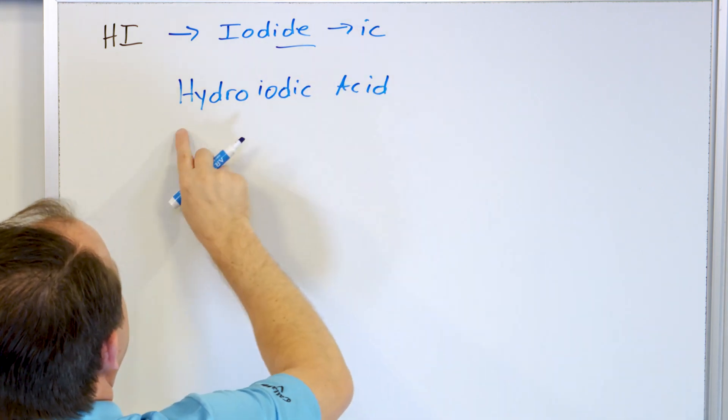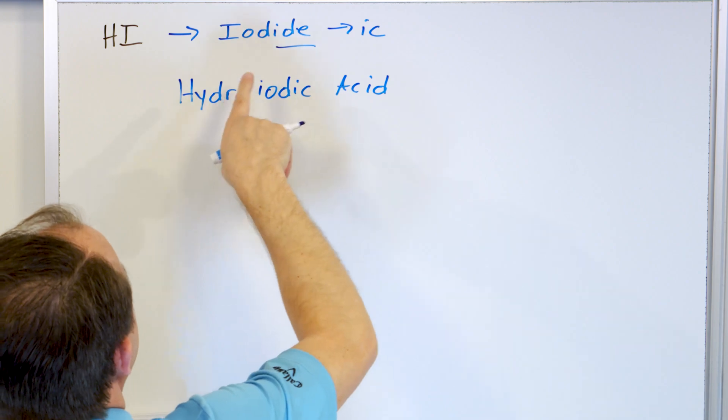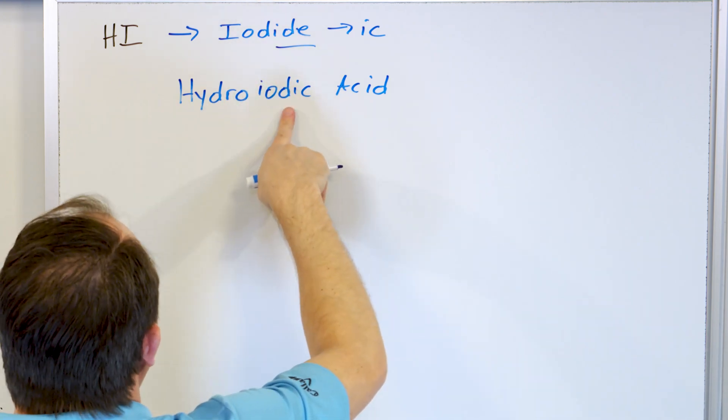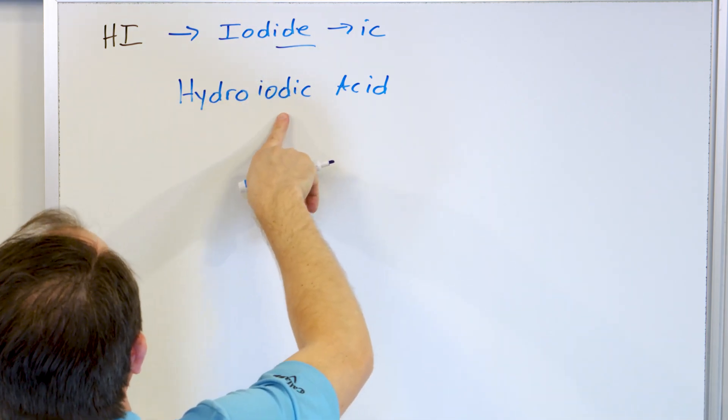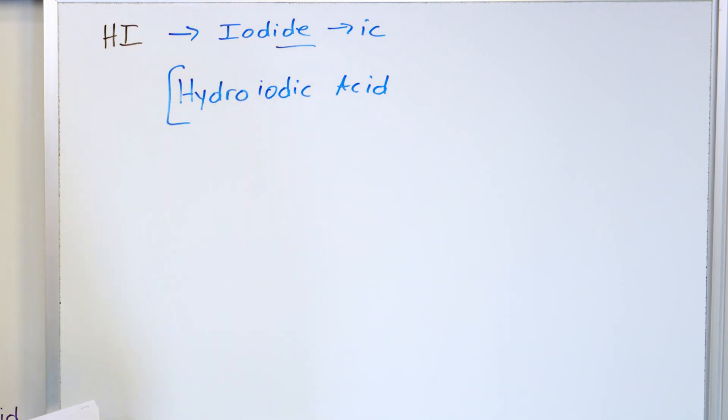So just like hydrochloric acid, hydrobromic acid, hydrofluoric acid, hydroiodic acid, named based on the ion. Hydroiodic acid.